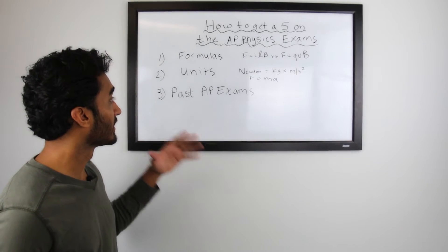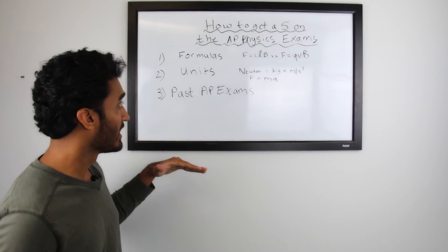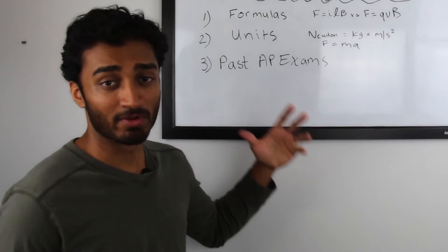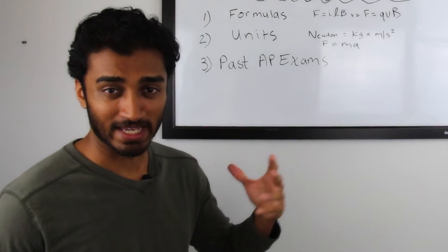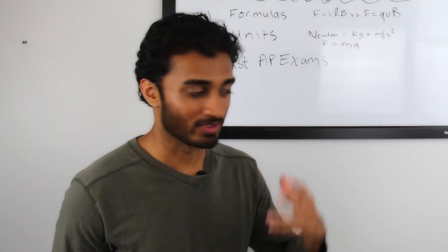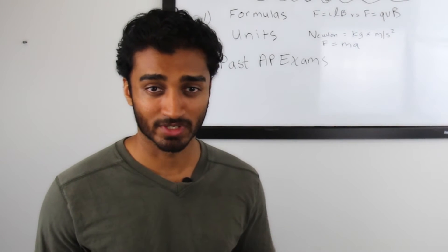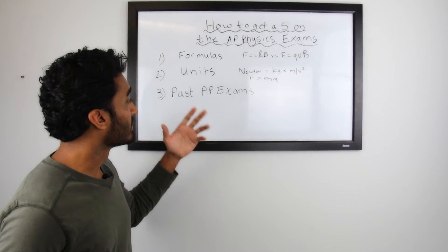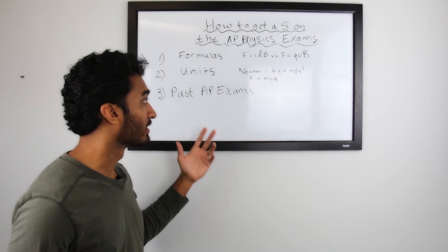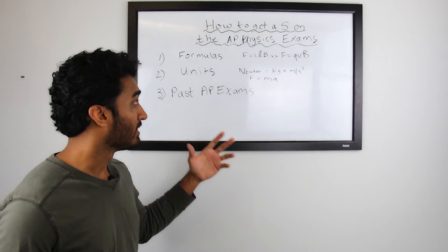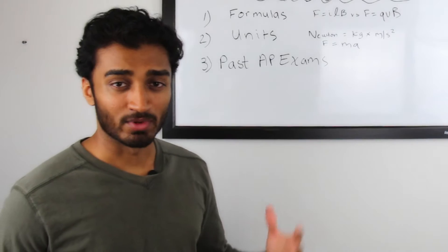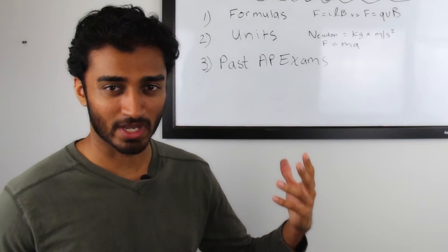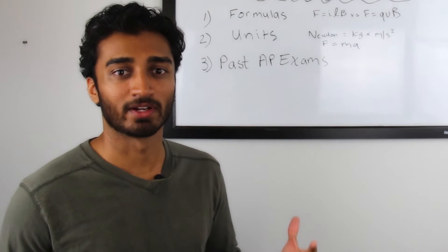Here I have an example. Suppose you get to the magnetism section and you see these two different formulas: F equals ILB and F equals QVB. Now they're both magnetic forces and it gets confusing because you don't know when to use which one. What you should be doing is figuring out what each variable means. You see I for current, L for length, B for magnetic field. When you see the L, it should give you an intuition that there's a length involved, so you should be looking at something with a length — that should be a current carrying rod.